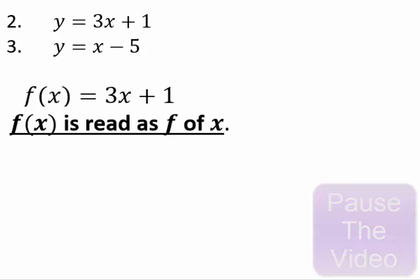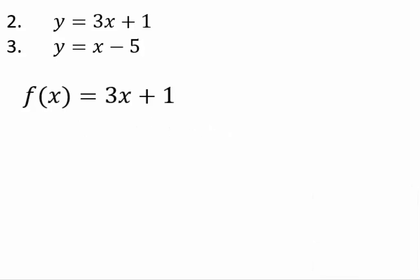Assuming you've come back, let's say I want to pick the letter g for the name of the function, so I would write g of x equals x minus 5. So here we have two functions f and g that represent what we had before, but now when I say f of x, I know I'm talking about the first function 3x plus 1, and when I say g of x, you know I'm talking about y equals x minus 5. There are a lot of advantages to using this notation.